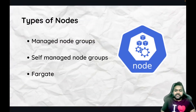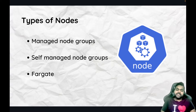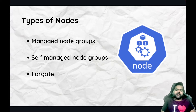We are going to talk about the types of nodes. Mainly there are three types of nodes available in EKS — the names for these are managed node groups, self-managed node groups, and Fargate. We'll go over them one by one and see what they offer and what they don't, so we can understand the differences between them.